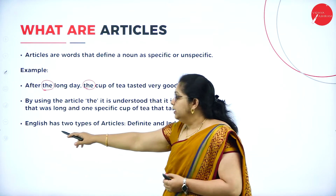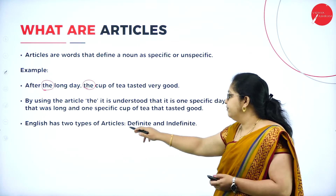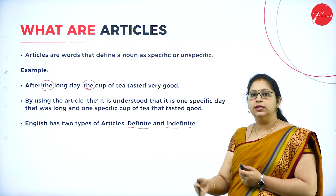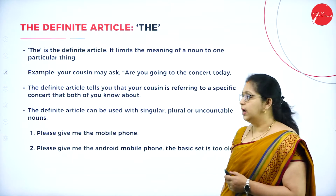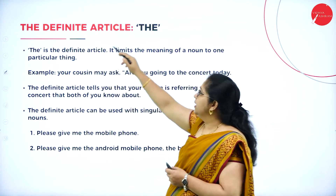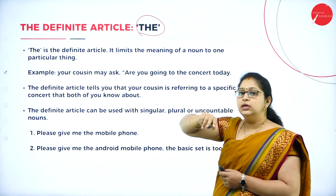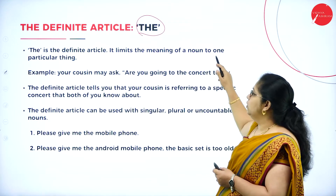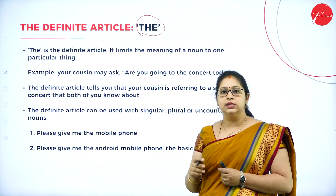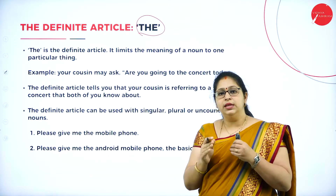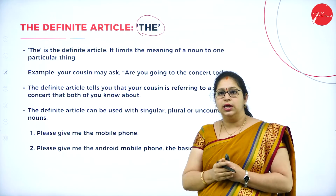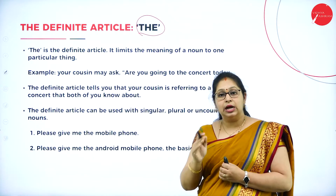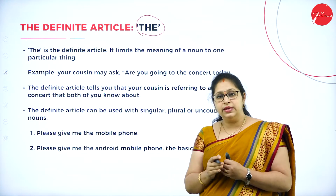English has two types of articles: definite article and indefinite article. Let us learn in detail about these. The definite article is 'the.' It limits the meaning of a noun to one particular thing — as seen in 'the long day' and 'the cup of tea.'